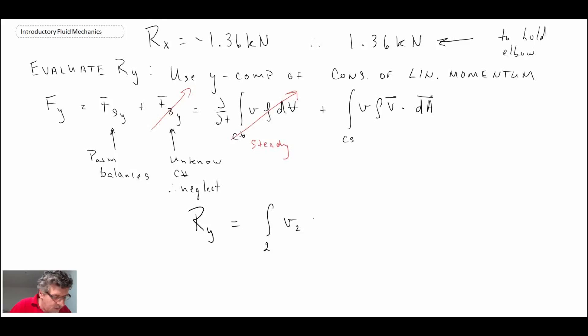That is going to be equal to an integral across control surface 2. And for that, we have V2, and then it's multiplied by row V dot DA. Again, let's be careful with this dot product. So we have DA as the vector pointing out. And we were told, or we know, that V2 is going in that direction. Consequently, the dot product of that is going to be positive.